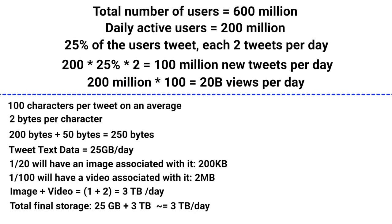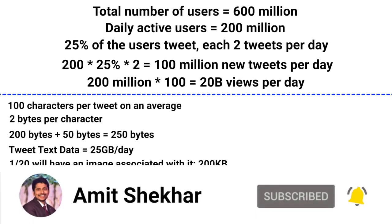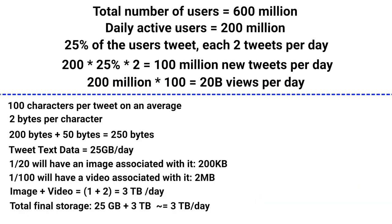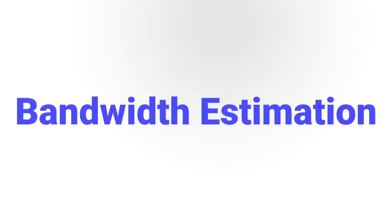So we know we would need 3 TB of storage per day based on our current calculation for 200 million daily active users. We can also add more things like followers, comments, retweets, etc., and calculate accordingly. We will do all of these in a dedicated video for the Twitter system design — please subscribe for updates. This was all about storage estimation. Now let's move to bandwidth estimation.